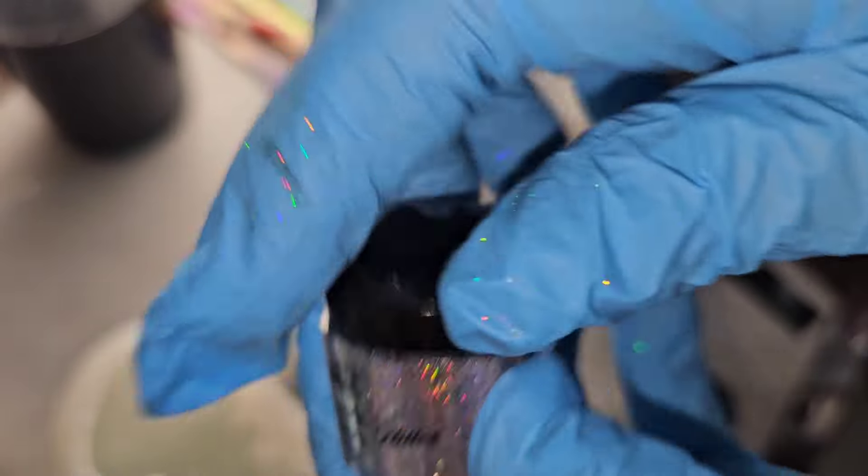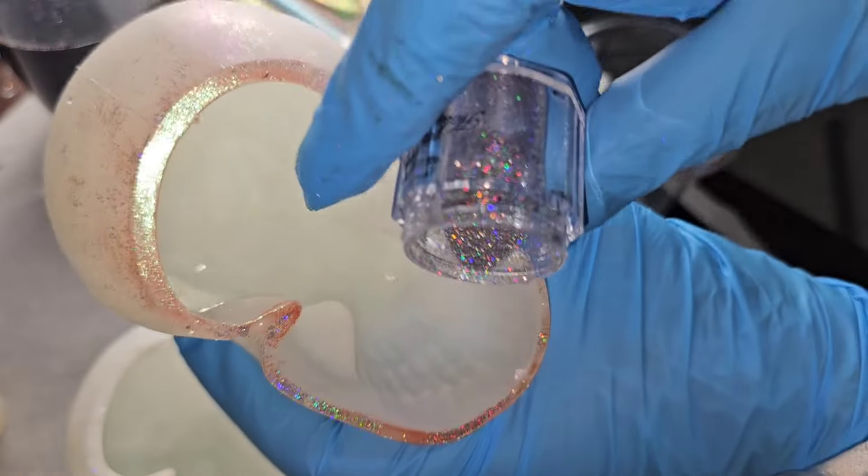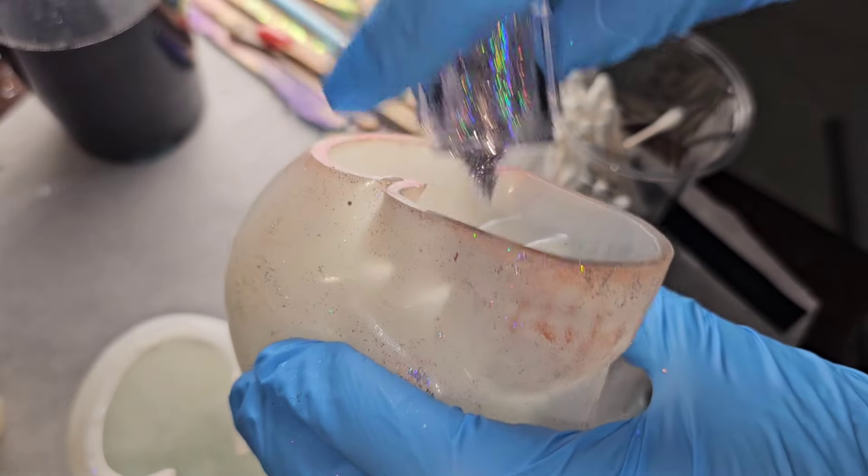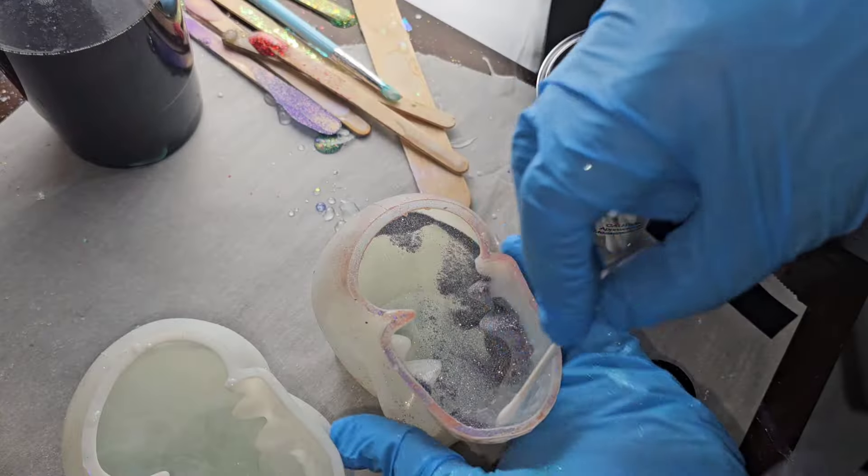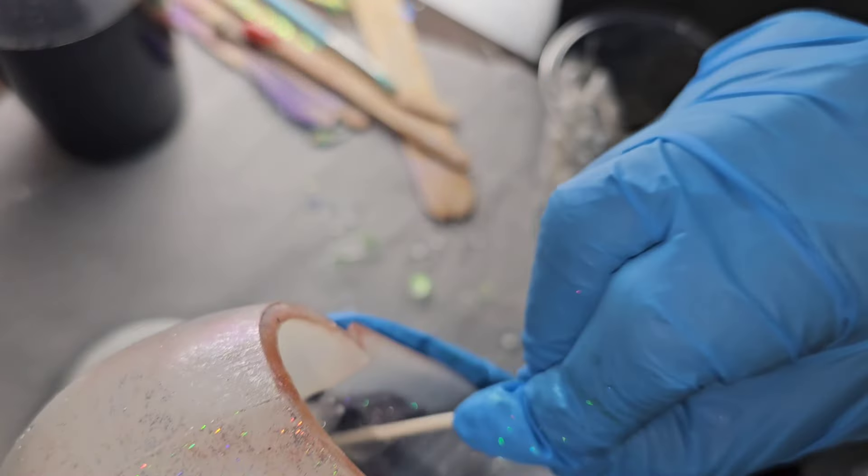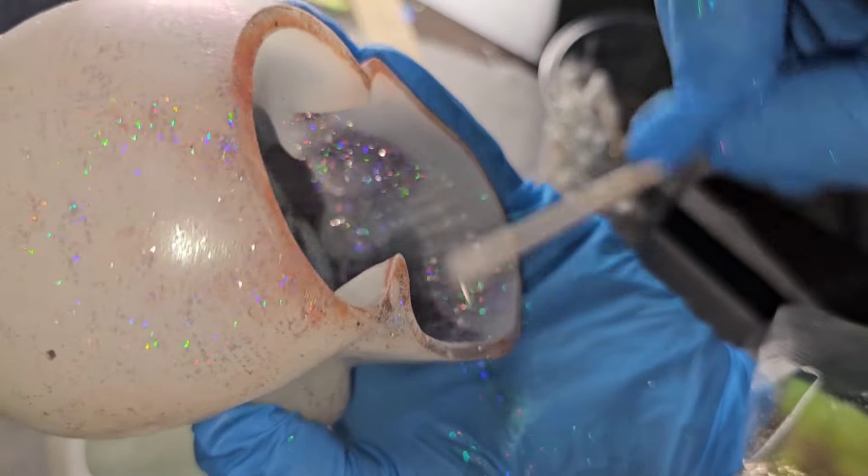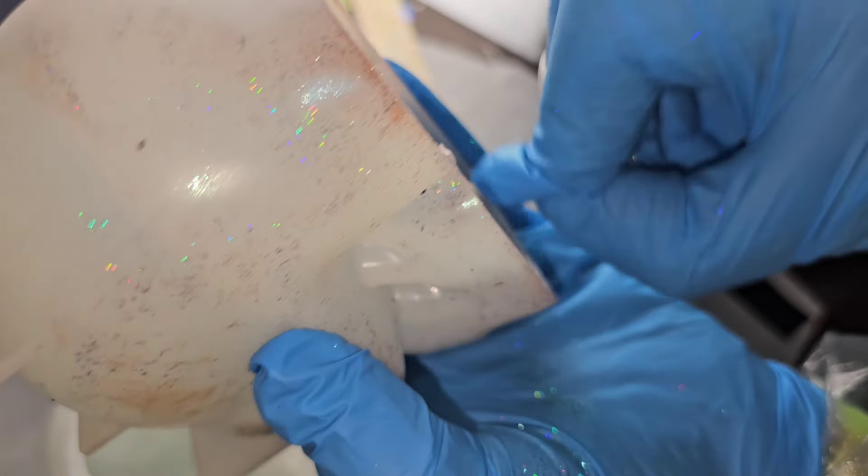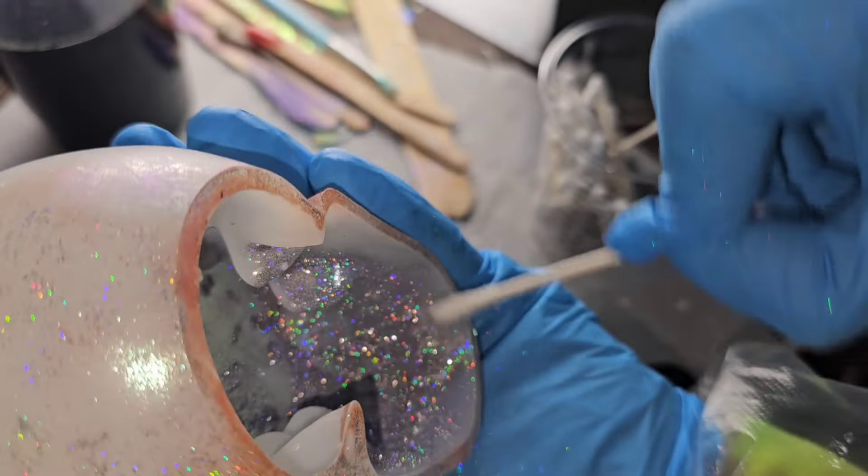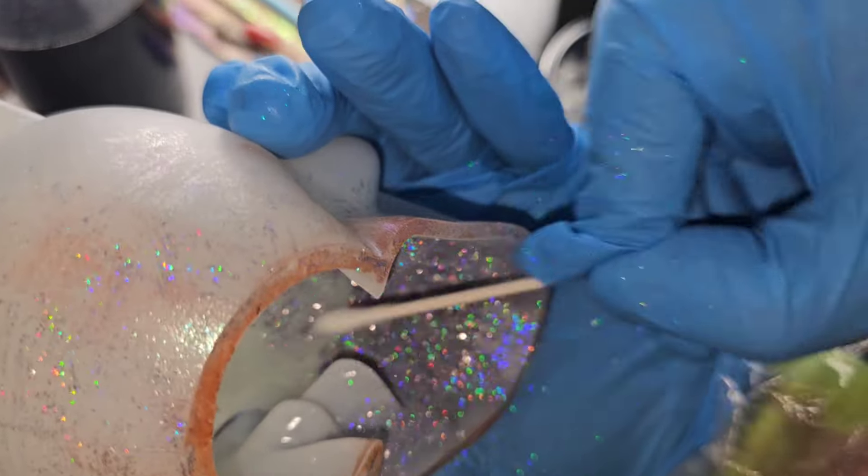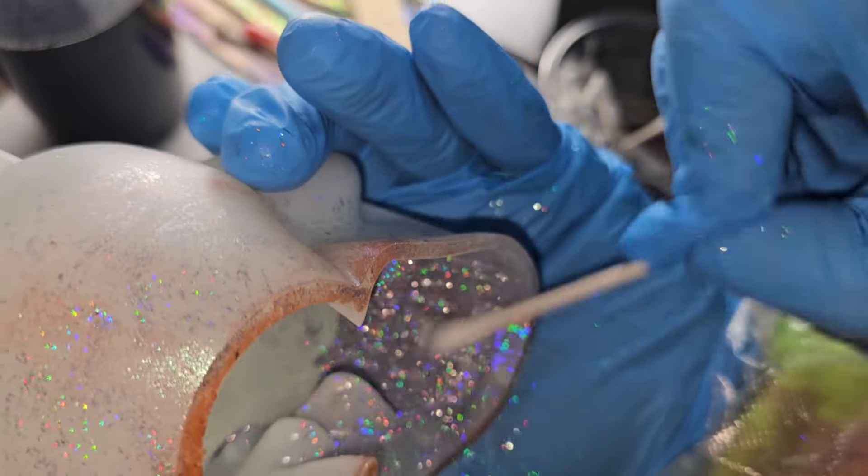This is the next day going in with some of this holographic glitter from Let's Resin. This stuff is so beautiful. You'll see when we take this out of the mold, it is amazing. Just poured that right into my mold. And now I'm just taking a Q-tip. You can use a Q-tip, an old makeup brush, or even your gloved hand to do this. You just want to make sure that you're careful and you're not breaking the seal on your mold when you're handling it.